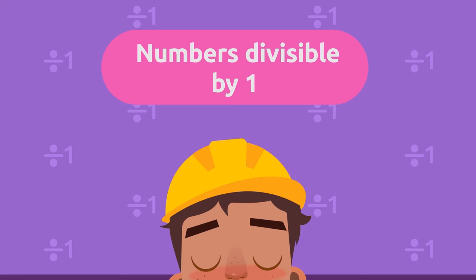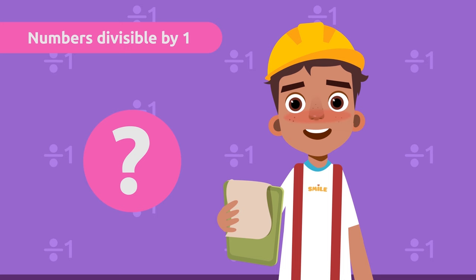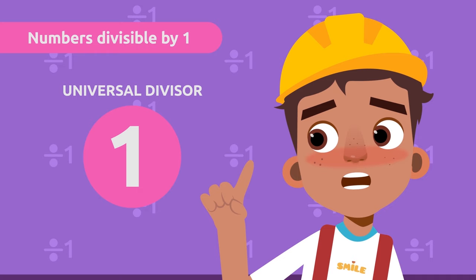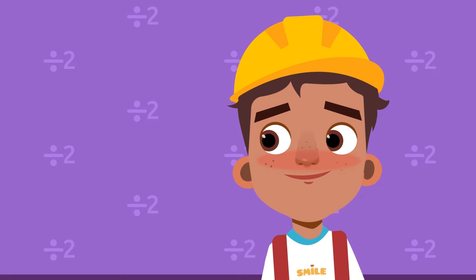Numbers divisible by one. There's a very special number which no divisibility rule is needed for, because any number you can think of is divisible by it. It's known as the universal divisor. The number one! Every number can be divided by one and the remainder will always be zero. Alright, let's go solve our robot problem.